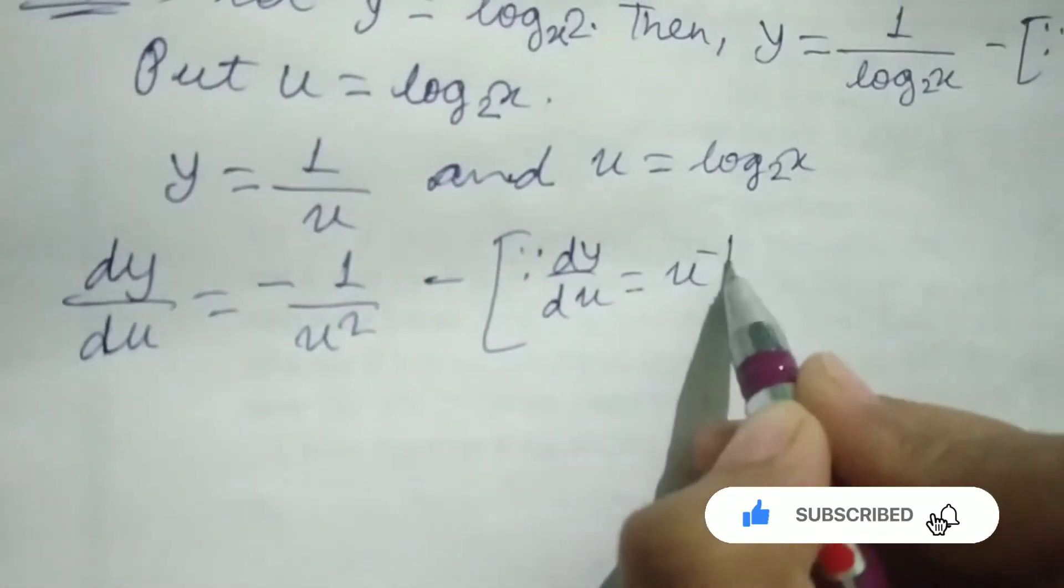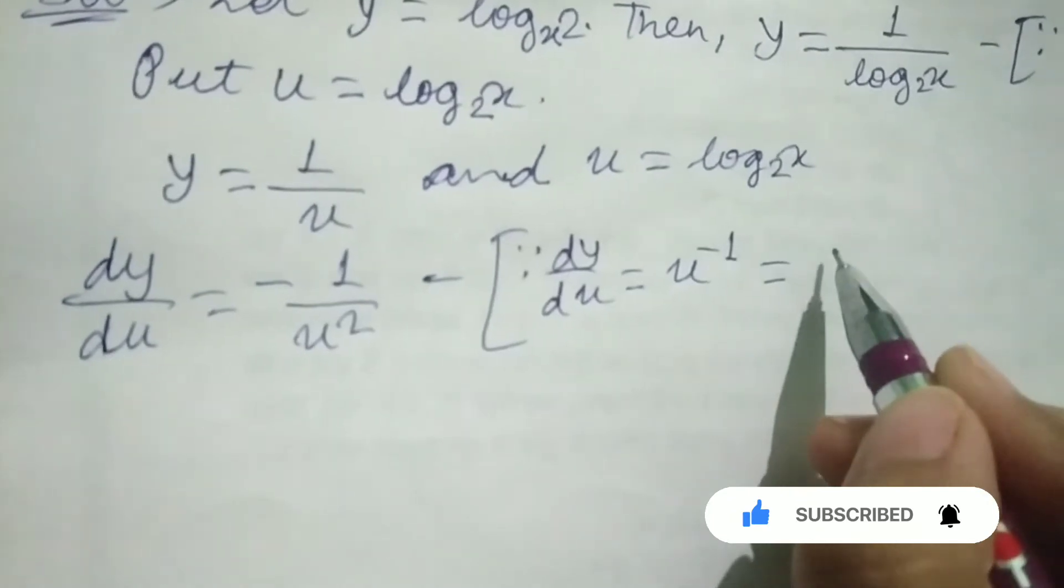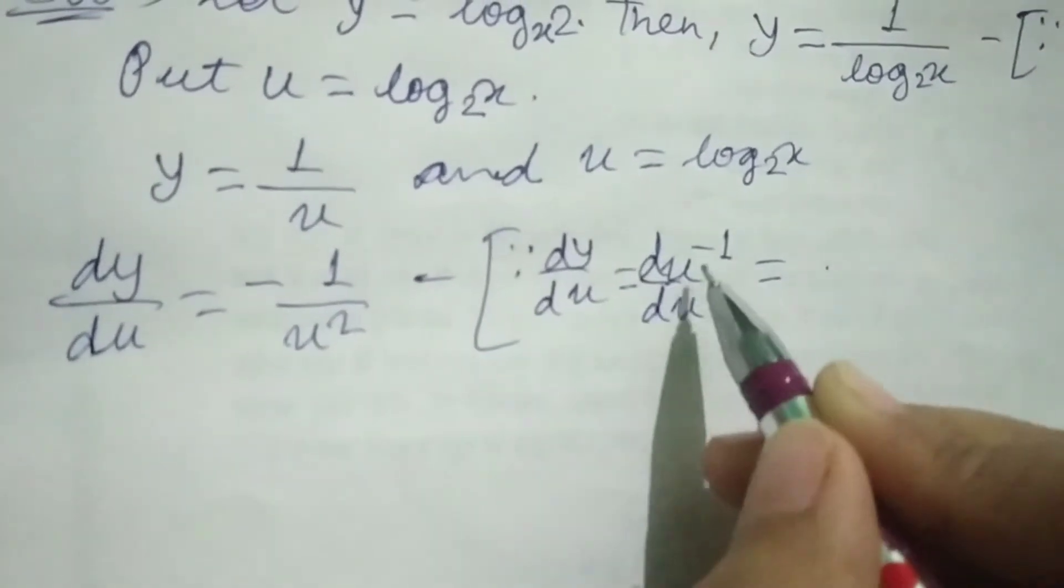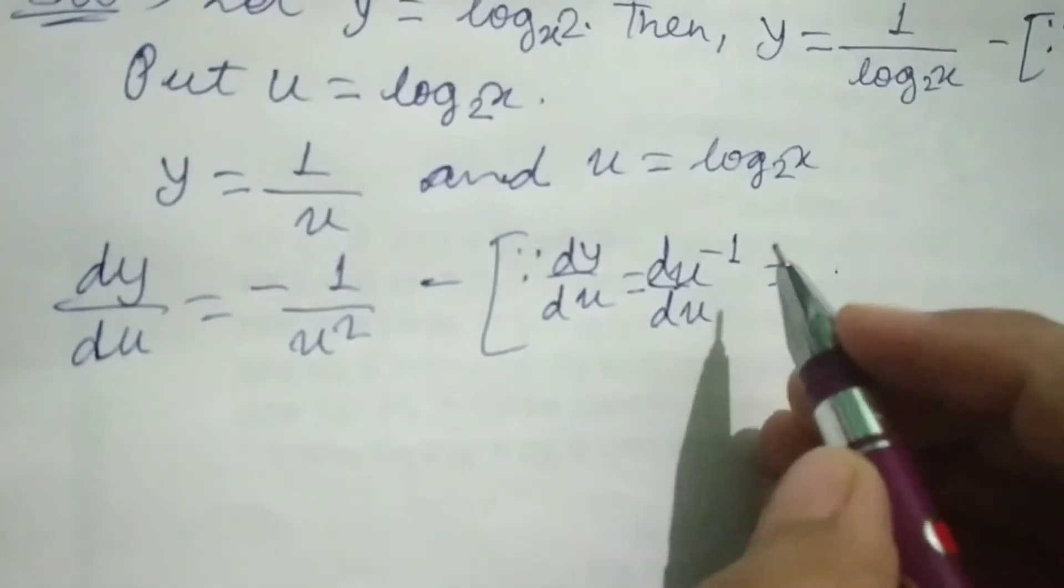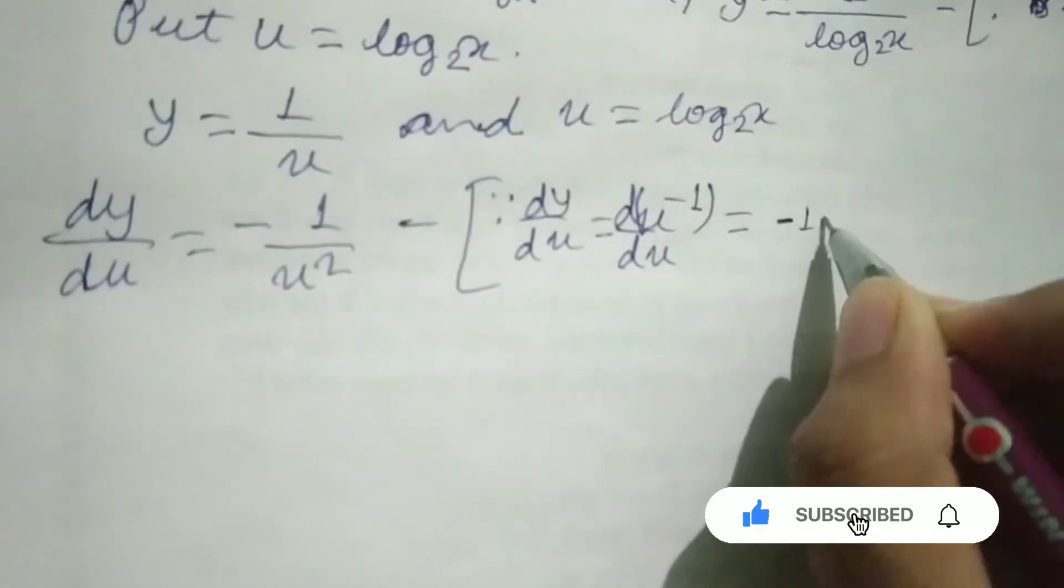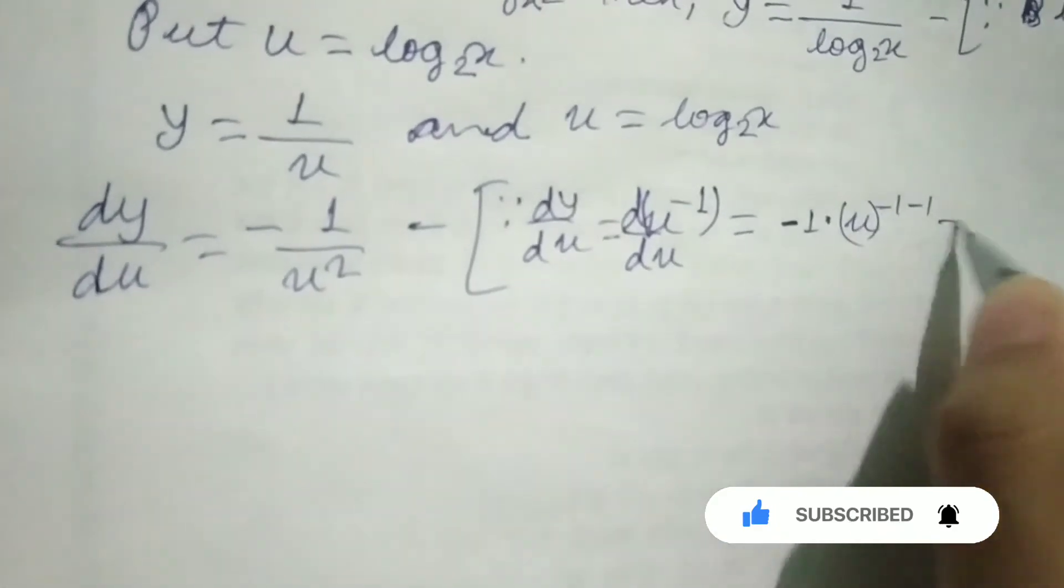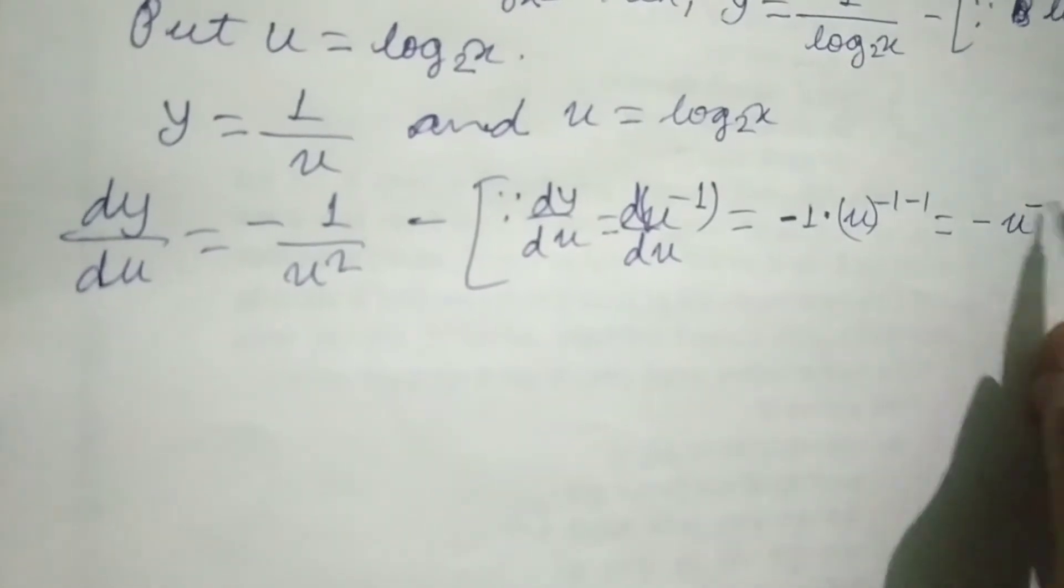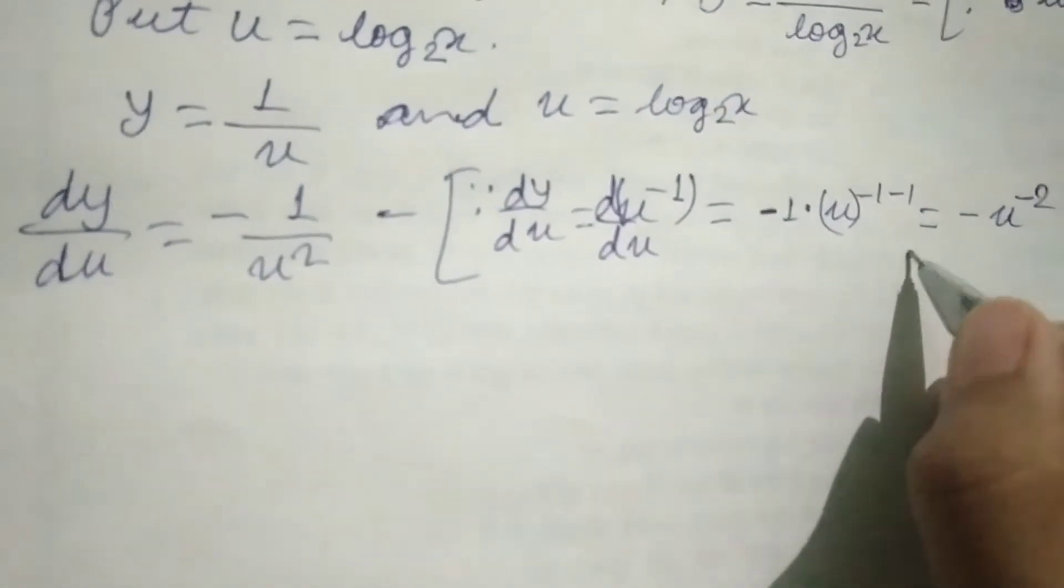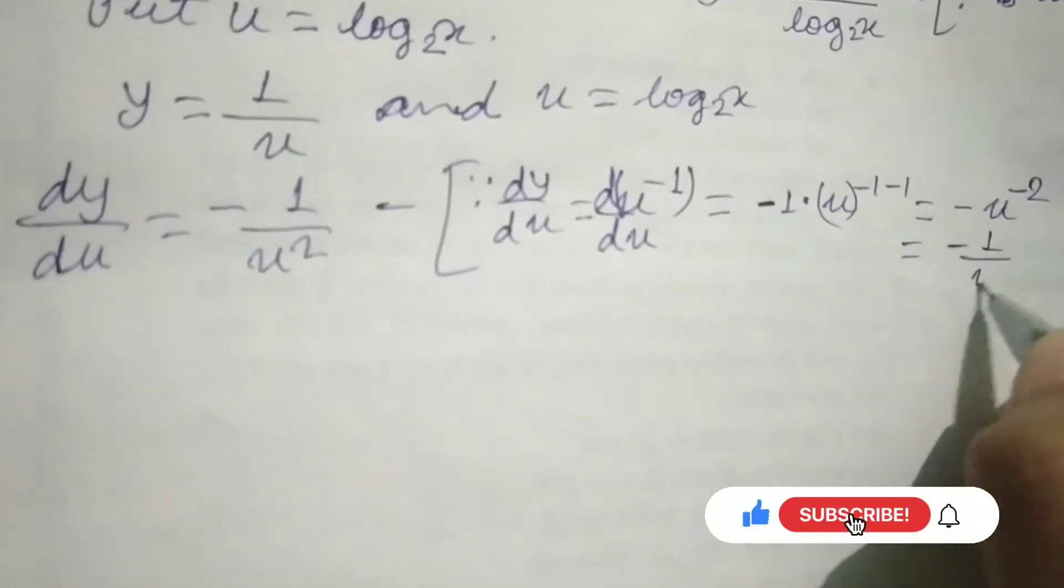After differentiation with respect to u, we get minus u to the minus 2, which equals minus 1 over u squared.